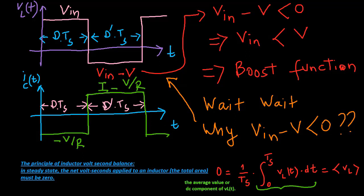Therefore, the inductor voltage during the second sub-interval, V in minus V, must be negative. Hence, V is greater than V in.